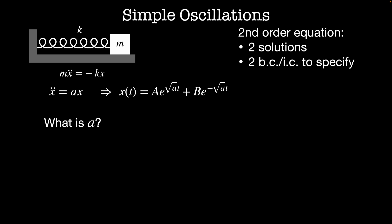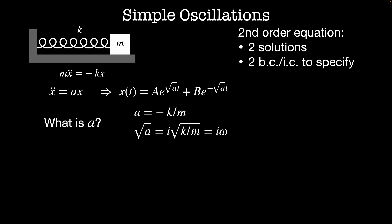In this case, a is going to depend on the constants of the equation. In our case, a equals -k/m, so the square root of a, which is negative, is going to equal i times the square root of k/m, which we call i times omega — where omega is the frequency of the oscillator. The full equation looks like this: x(t) = a·e^(iωt) + b·e^(-iωt).